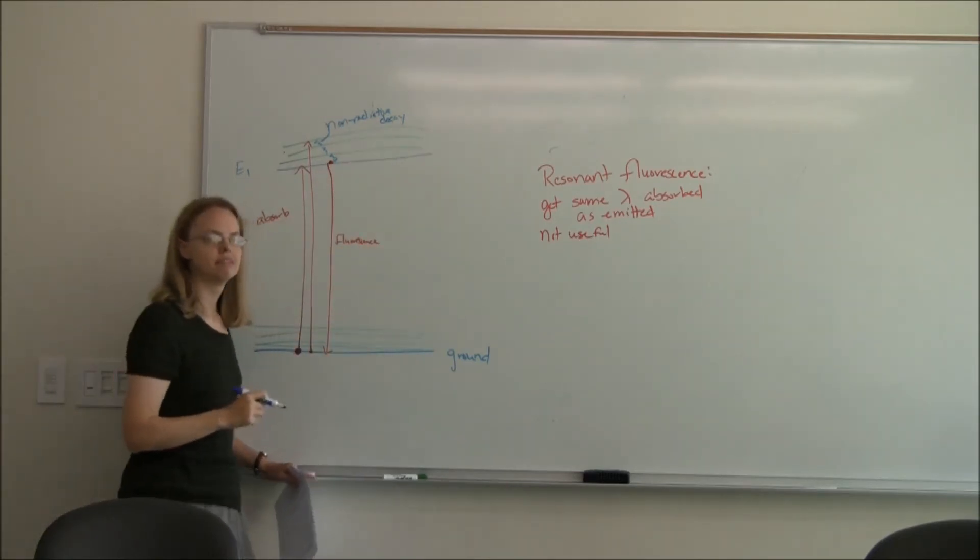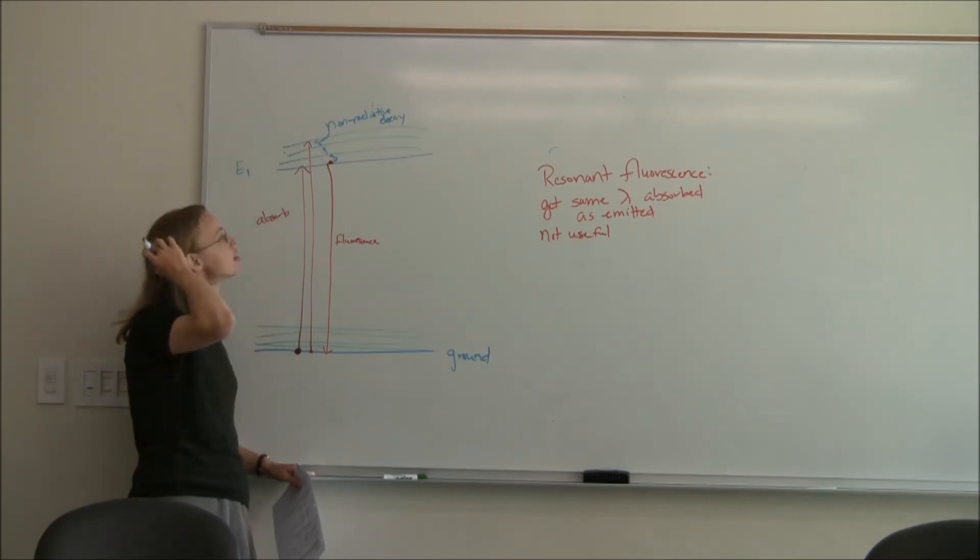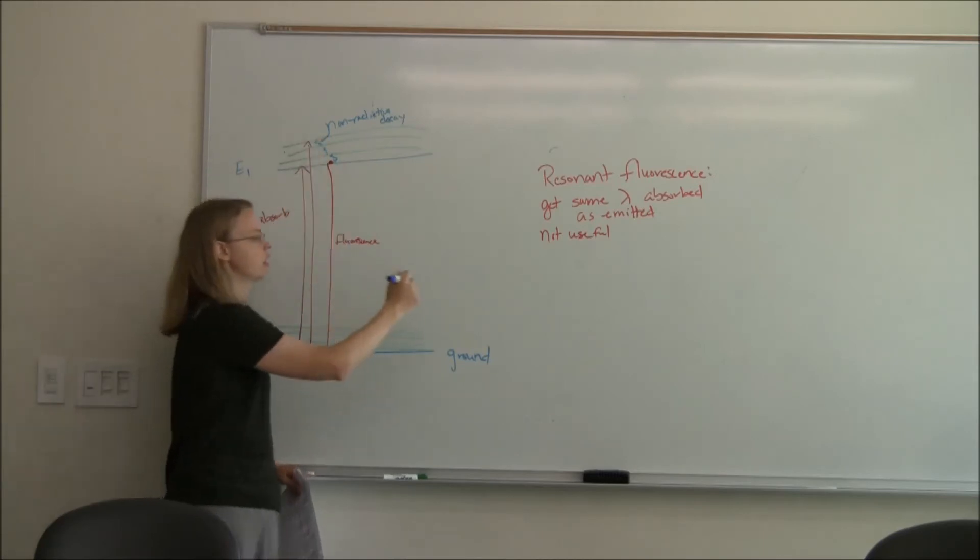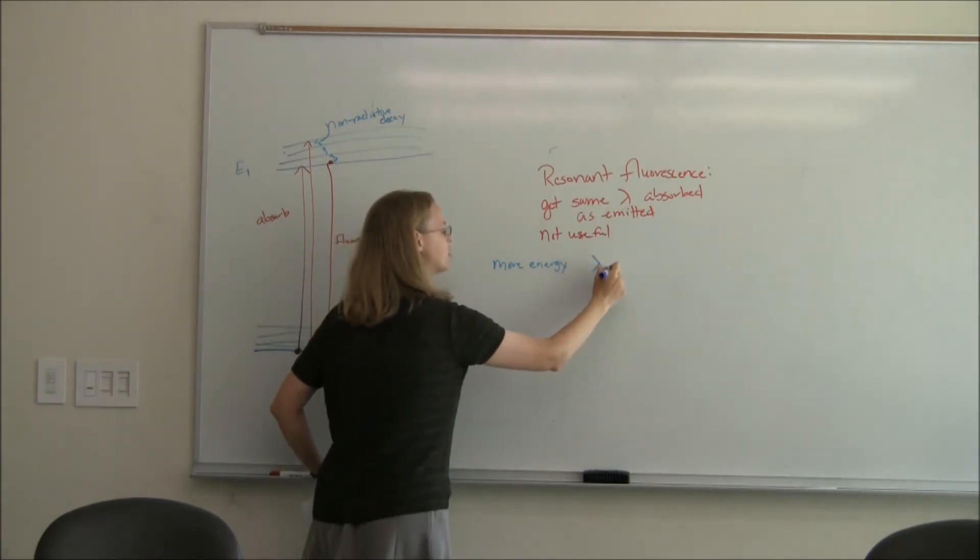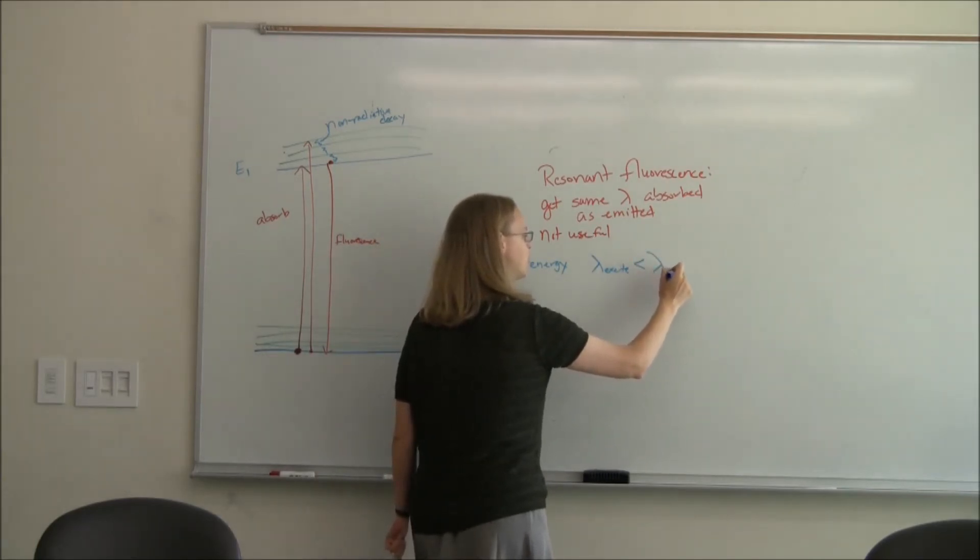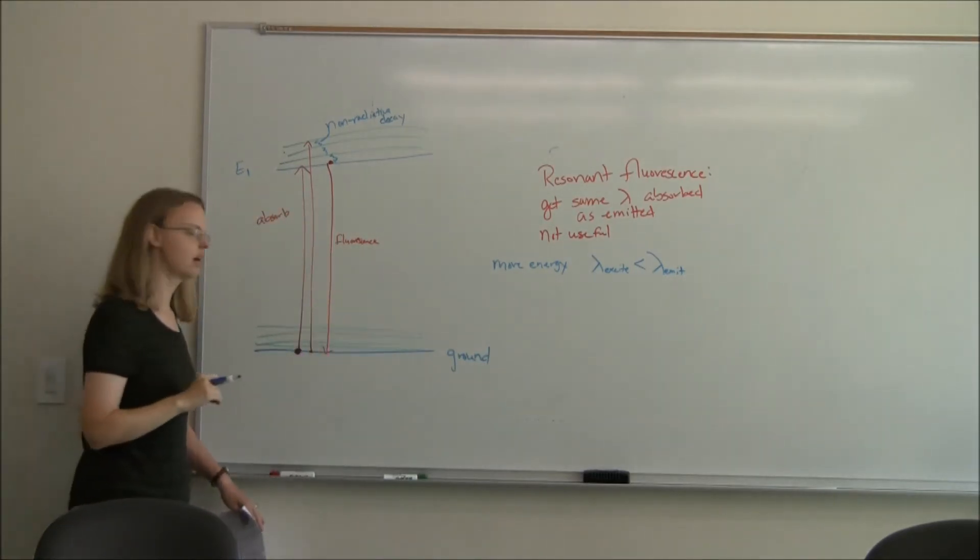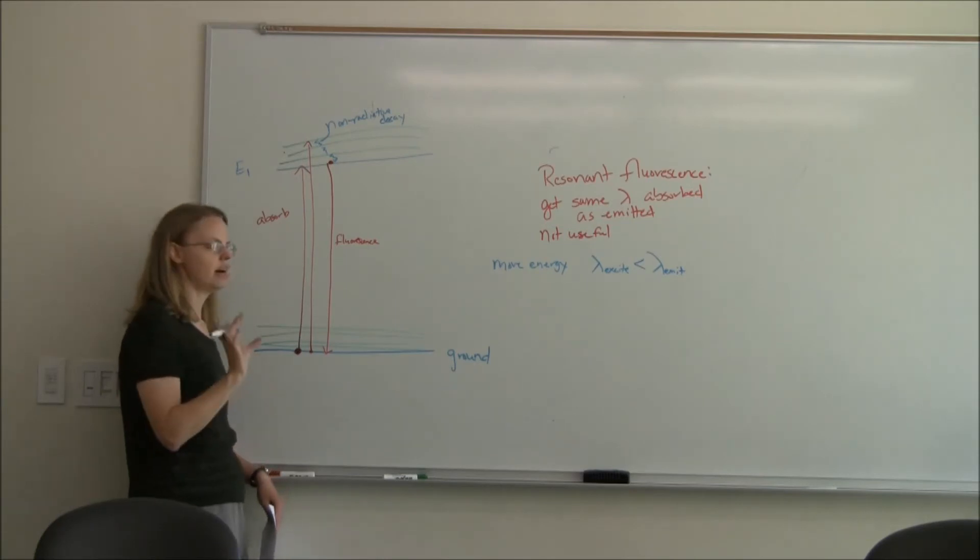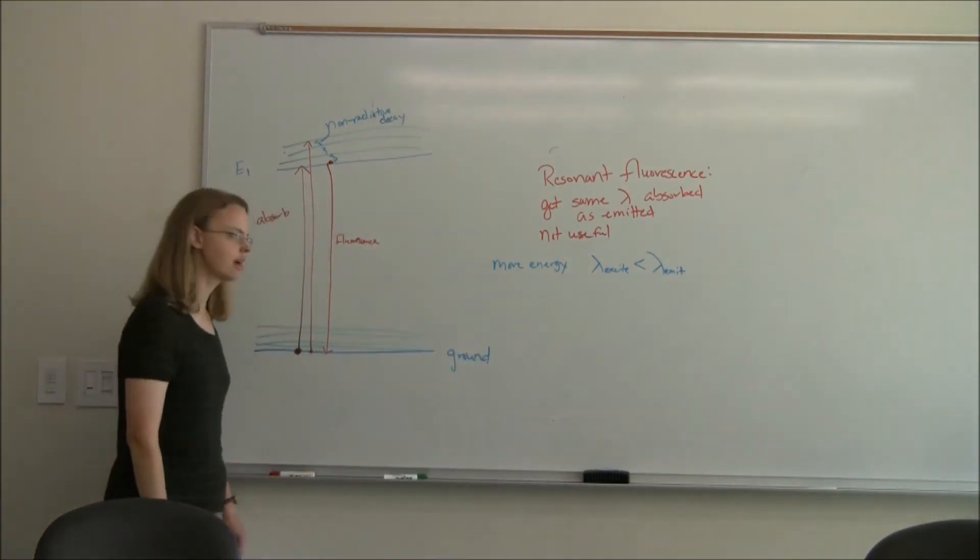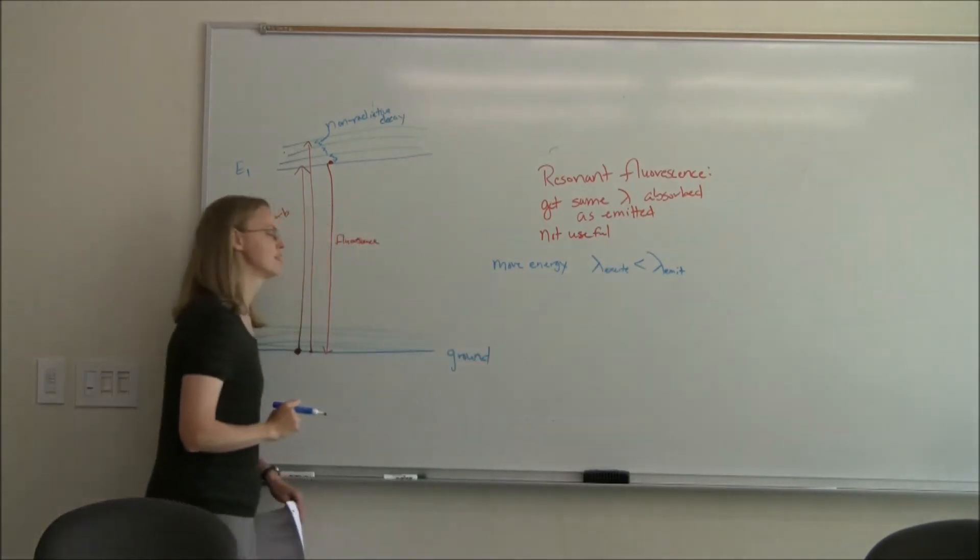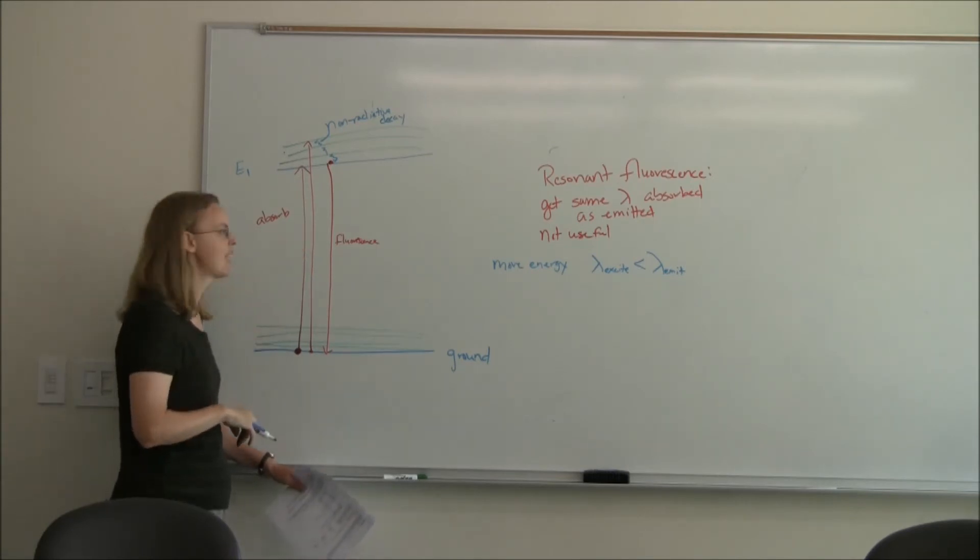The fluorescence lines should only be coming from the excited electronic state. These are all what we call non-radiative decay. You bump into your neighbor, you give off a little heat. There are lots of ways to lose a little bit of energy without emitting light. So now you can see that we used more energy. We have more energy. So that means that the wavelength that we excited with is going to be less than the wavelength that's emitted.